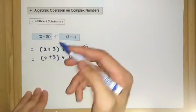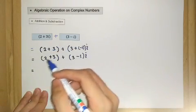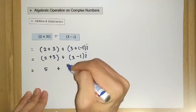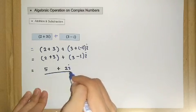So let's solve this. We have 2 plus 3 is 5, plus 3 minus 1 is 2, so 2i. So this is the answer for this addition, 5 plus 2i.